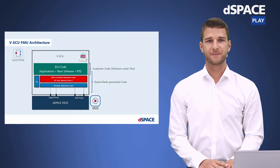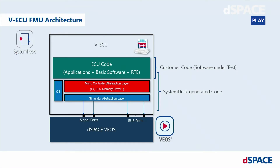Now we will have a deeper look into the VECU. Typically, current ECU architectures are based on the AUTOSAR standard and consist of three main parts: application software, RTE, and basic software. Our VECU approach does not necessarily require an AUTOSAR architecture and works for non-AUTOSAR ECUs as well. The software under test makes up the upper layer, and the lower layer of the VECU consists of the Systemdesk-generated parts. The lowest layer of a VECU with AUTOSAR architecture is a microcontroller abstraction layer, which is directly connected to the dSpace-specific simulator abstraction layer inside the VECU.